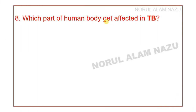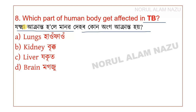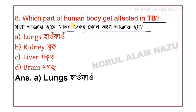Question 8: Which part of the human body gets affected in TB? In TB, the lungs are primarily affected.